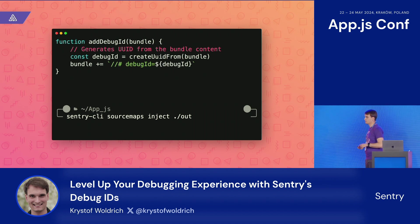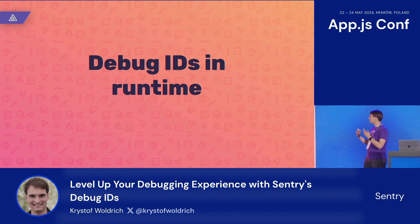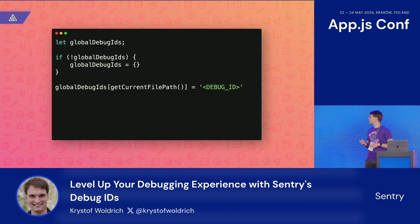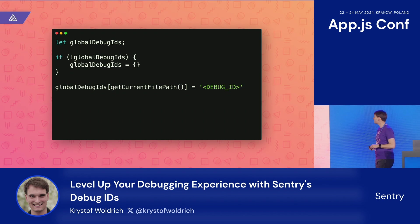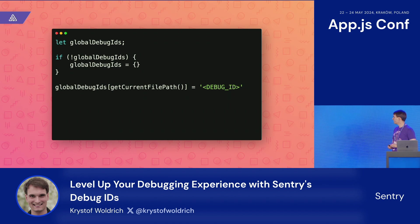That's not enough for debug IDs to do the magic I'll show at the end — we need them available in the runtime as well. Because current JavaScript engines do not read debug IDs out of the file, we need to use a polyfill. We define a global variable — a map of debug IDs being loaded into the runtime as JavaScript bundles execute. A helper function, getCurrentFilePath, creates an error, reads the stack trace, and gets the file associated with the debug ID.